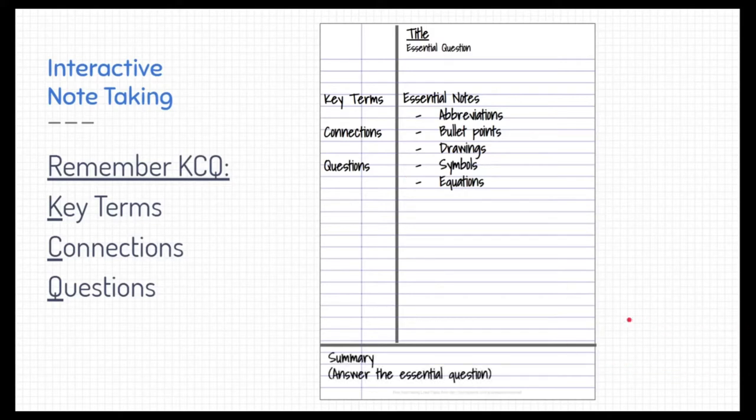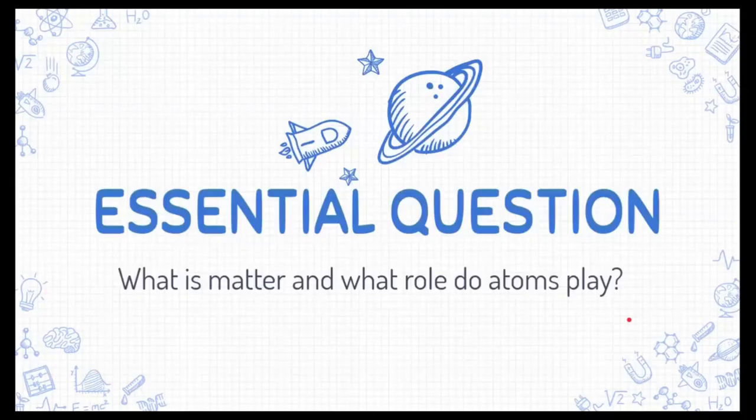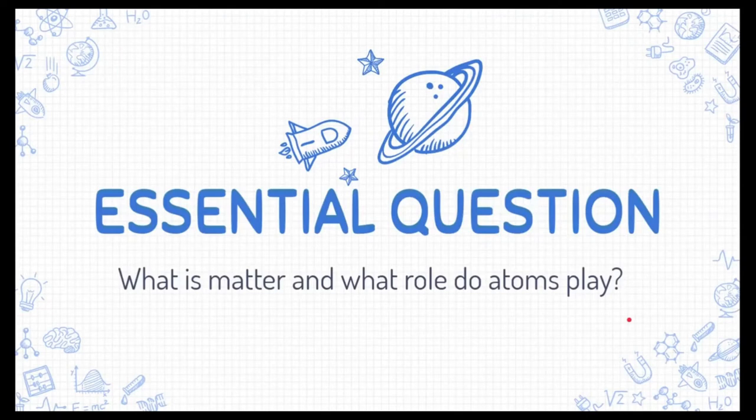The bottom section of these notes are where you're going to do a summary. This is where you're going to answer that essential question that we asked at the very beginning of the notes in a deep way with examples and diagrams and things like that. Alright, so let's go ahead and get started. Here is the essential question for this specific set of notes. Remember, the essential question is what we're trying to focus on, and it's not something we're going to easily answer. It's going to take a little bit of depth. So as we go through, make sure you are referring back to this question. That way we can answer it in a deep way. What is matter and what role do atoms play?